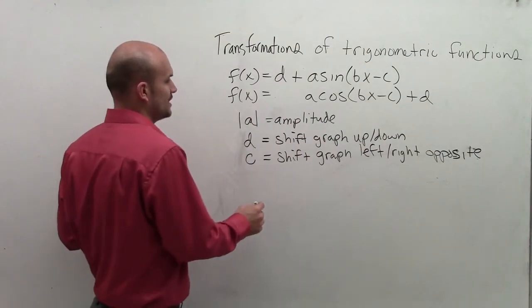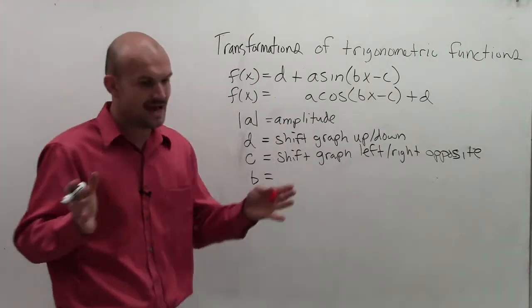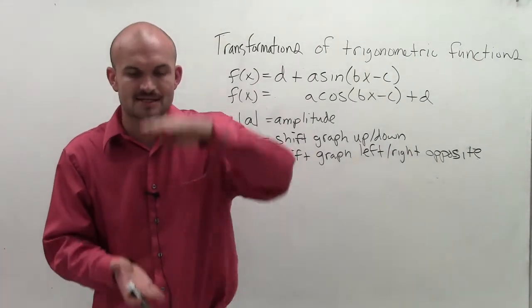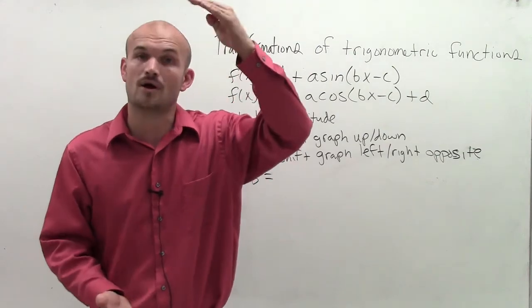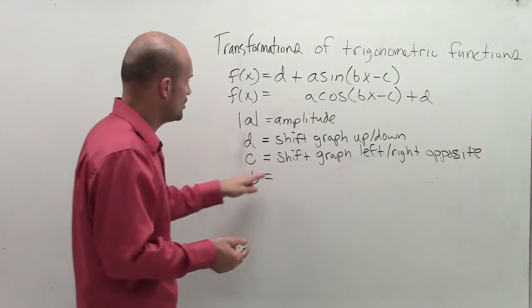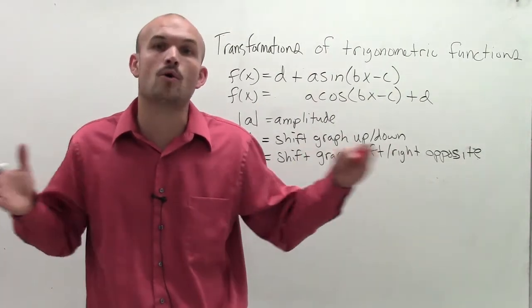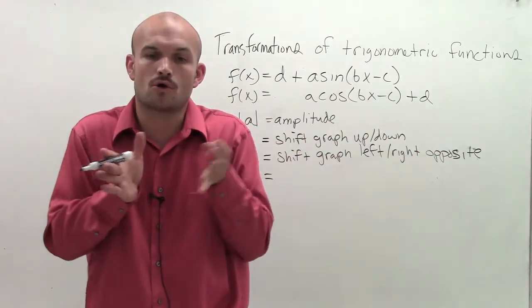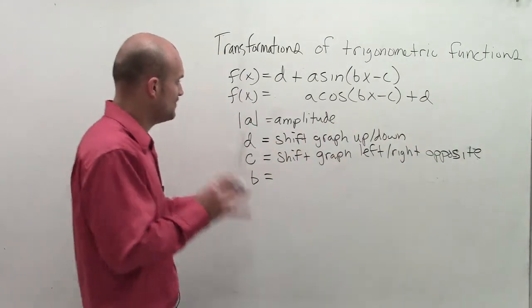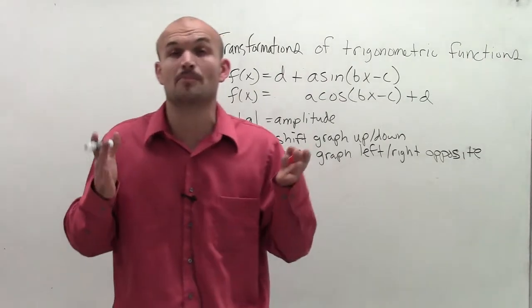Now the next one we need to look at is our b. And if you remember a, we talked about amplitude - that is going to stretch your graph vertically, right? It can make your amplitude nice and big, or you can make it nice and small. So b is going to have that similar effect, but now it's going to be talking more about a horizontal stretch or horizontal shrink. So what b actually does, rather than talking about the horizontal stretch or shrink, we're going to talk about how it affects our period.